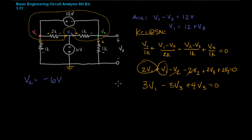So first let's plug in to this equation that V2 equals negative six volts. When you do that you'll get 3V1 plus 4V3 equals negative 18. Then we'll plug in V1 being equal to 12 plus V3 from our other auxiliary equation.